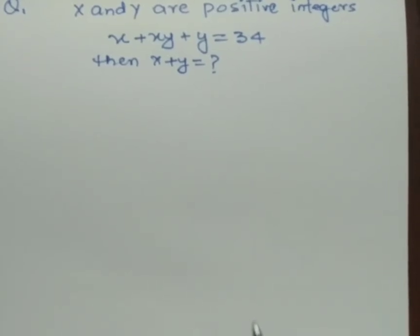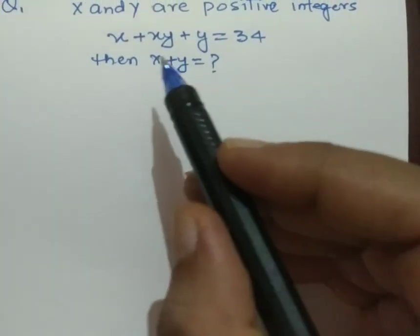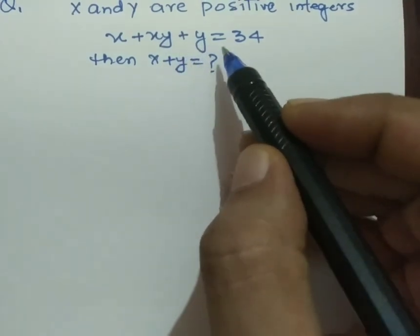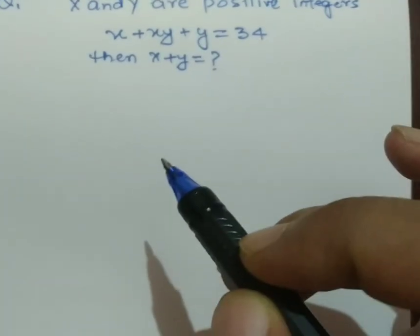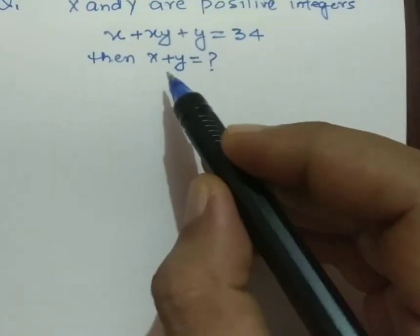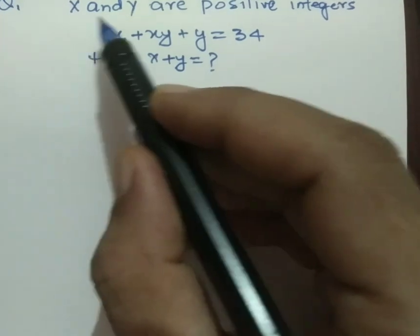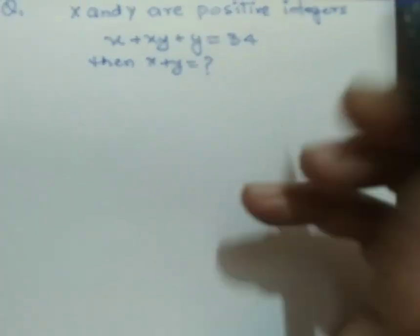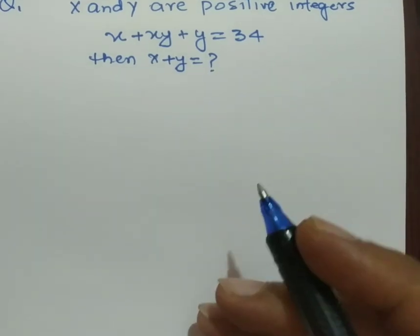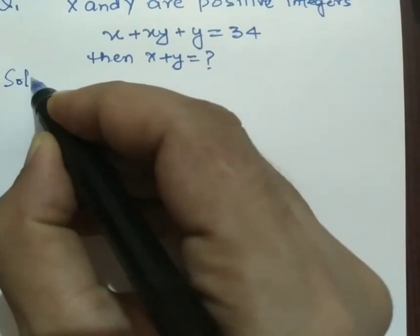Hello everyone. Today we are going to solve this problem: x plus xy plus y equals 34. What will be the value of x plus y? We need to get this value, where x and y are positive integers. So how will we solve this? Let's start the solution.